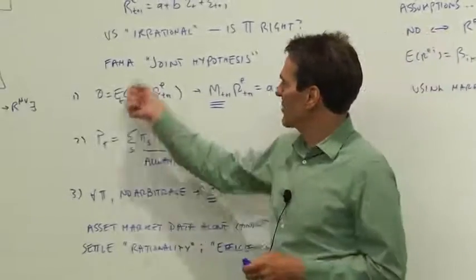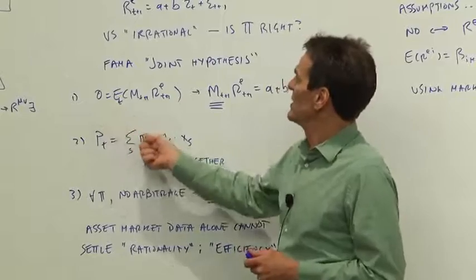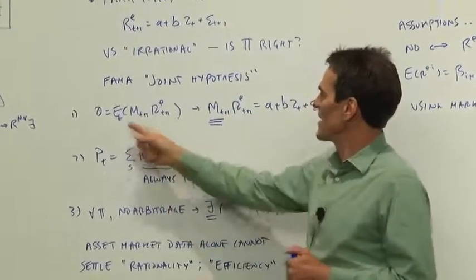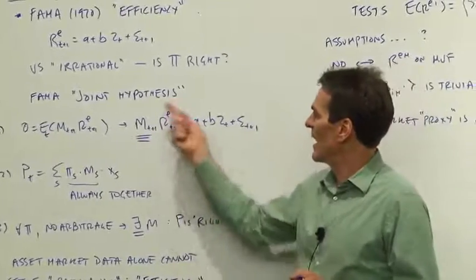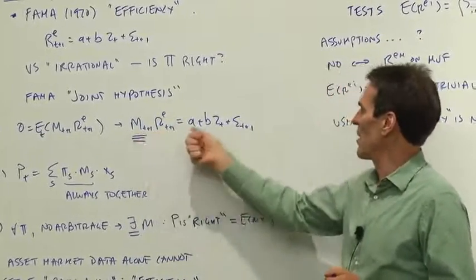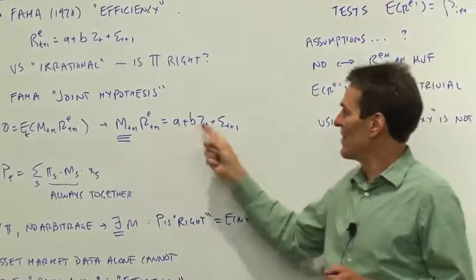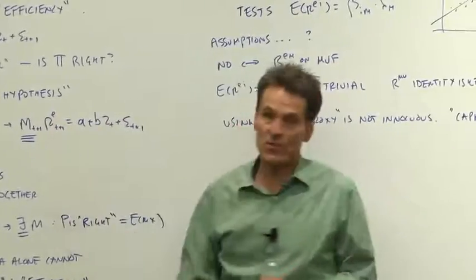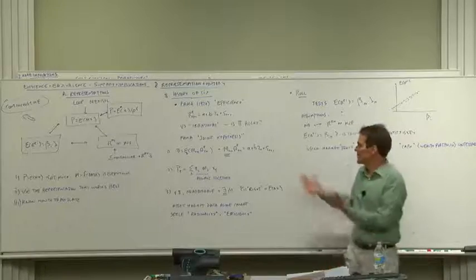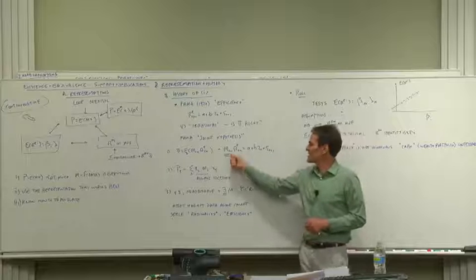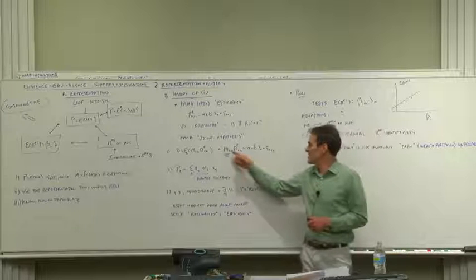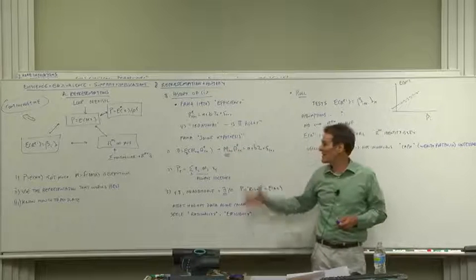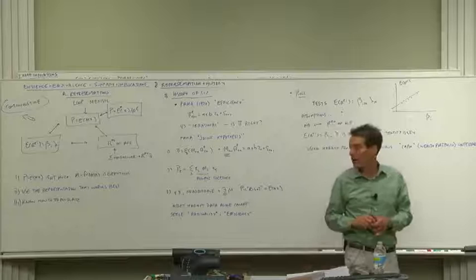One is let's look at excess returns. The true model is not that excess returns are unforecastable. Zero equals E of MR means that if I take the product of MR and regress it on something, that should be unforecastable, not returns itself. To test forecastability it's a joint test of a model of market equilibrium, something about the discount factors. They always enter together and unless I can tell you something about the discount factors I can't tell you anything at all.